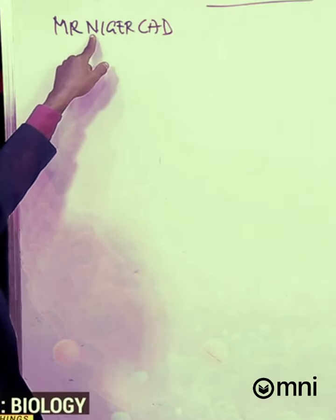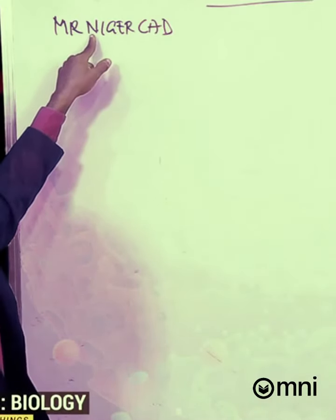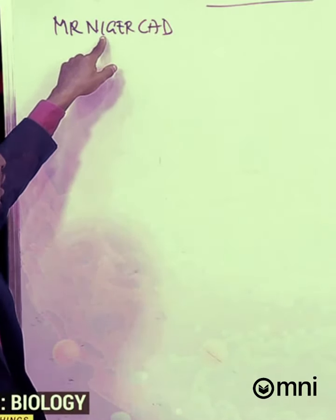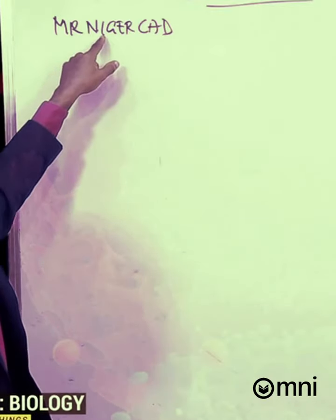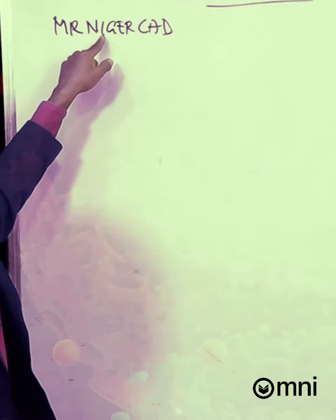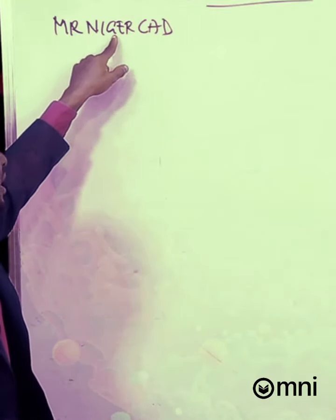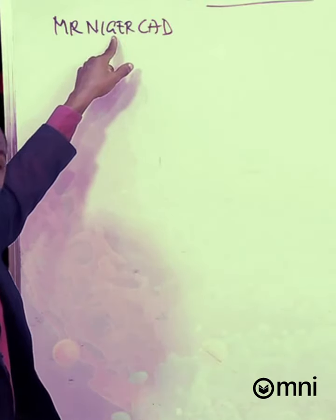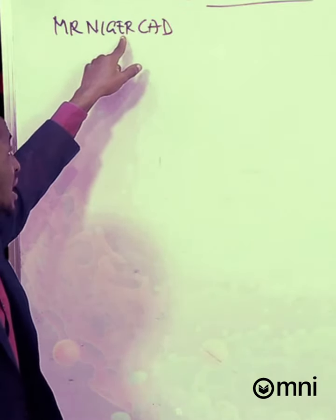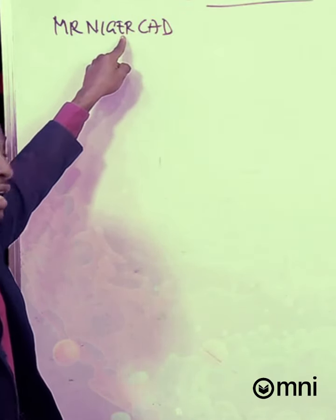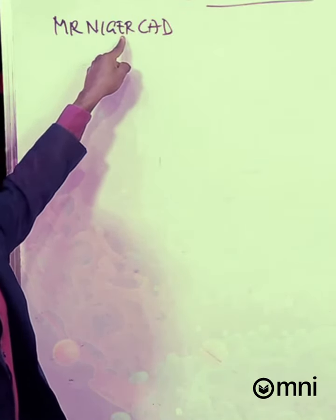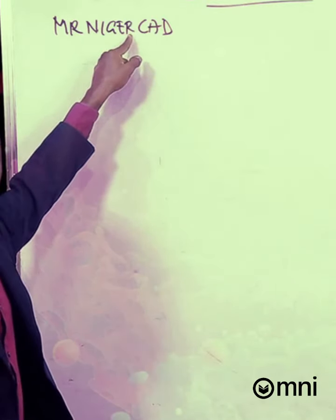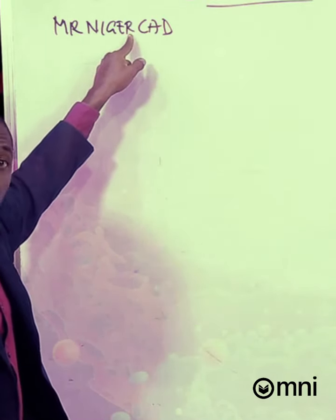The third one, which is letter N, represents nutrition. The fourth one, which is I, represents irritability. The next letter, which is letter G, represents growth. The next letter, which is letter E, represents excretion. The next letter, which is letter R, represents reproduction.